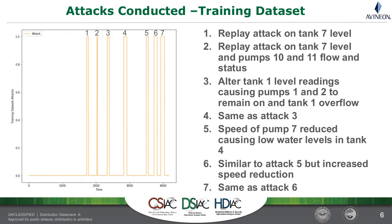There were two data sets where there were attacks. In the first one, which we're calling the training data set, there were seven attacks of a variety of different types that you might see against an industrial control system of this nature — a replay attack, some where they were altering the tank level readings, and some where they were reducing pump speeds. The orange line, when it goes up, indicates each of the attacks, and you'll see this type of representation used a little later on.